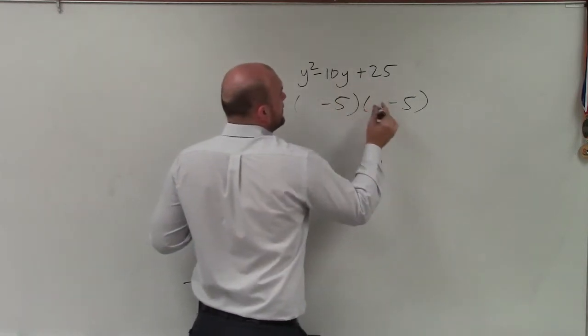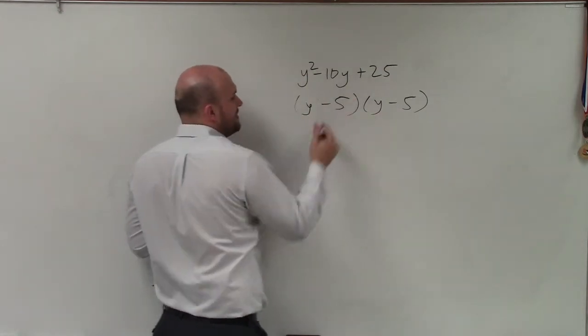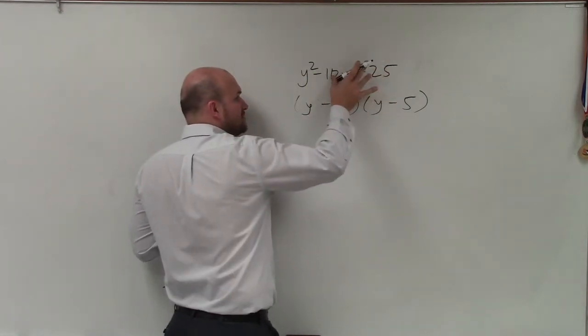Therefore, y times y gives me y², and I can write this as a perfect square trinomial. Write it as a binomial squared, which is (y - 5)².